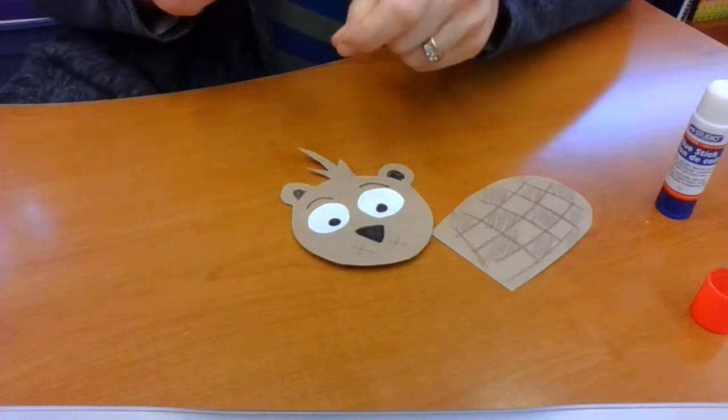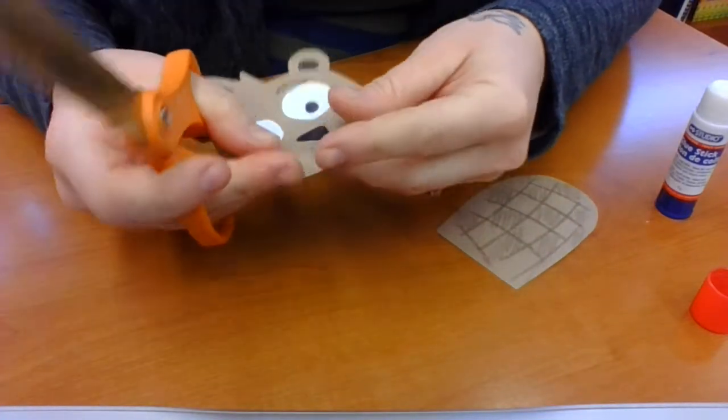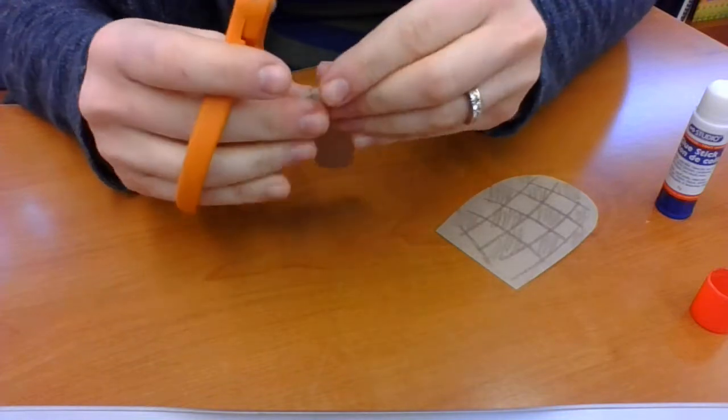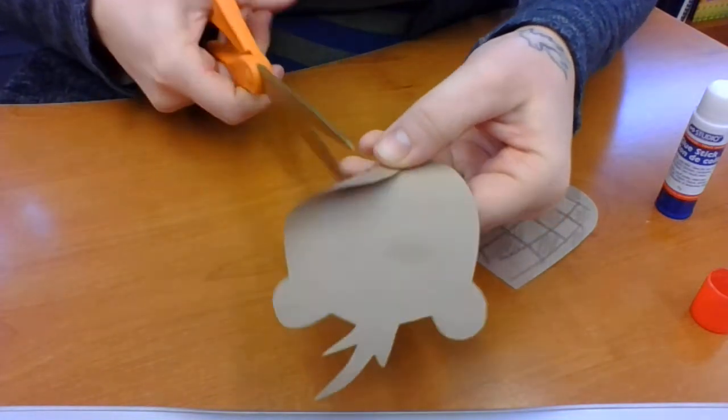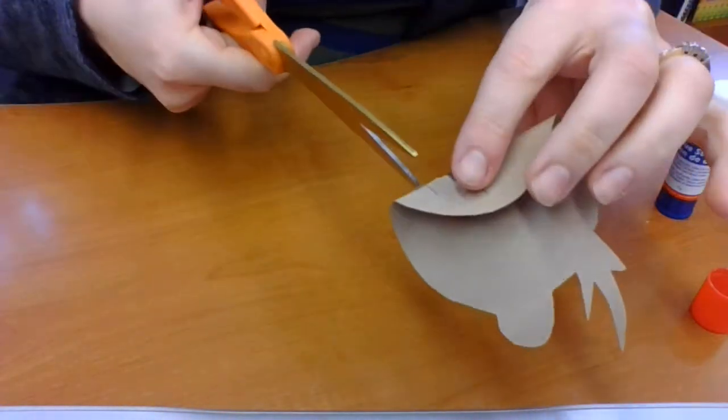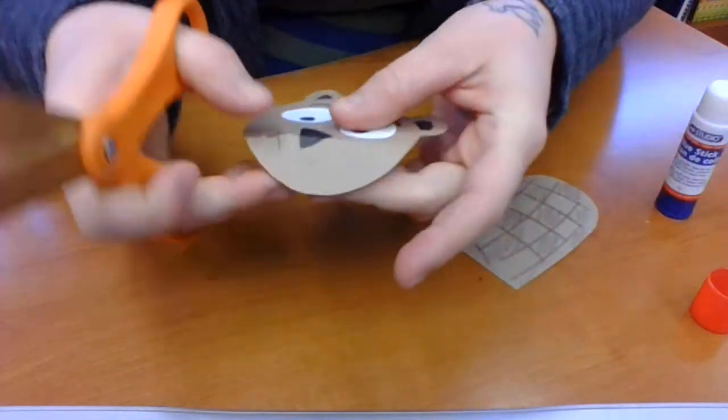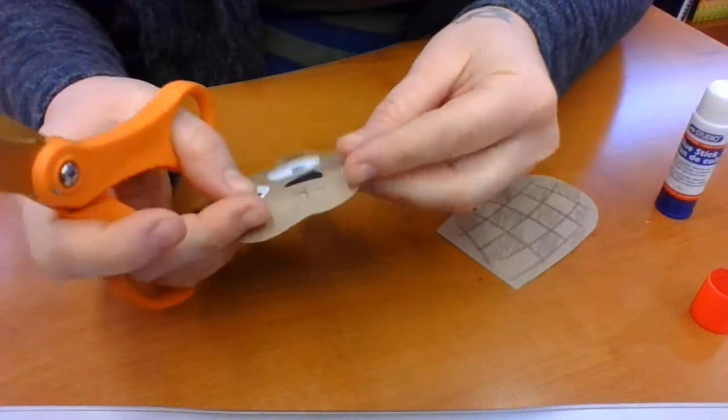So what those X's are for is we're going to just cut along those lines. So I'm going to fold my paper in half and then just do a little snip and then fold it along the other side of that X and do a snip.